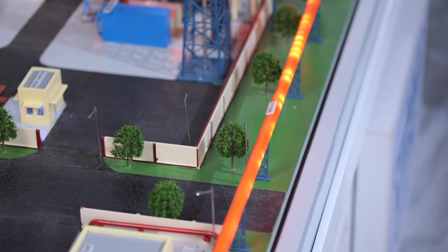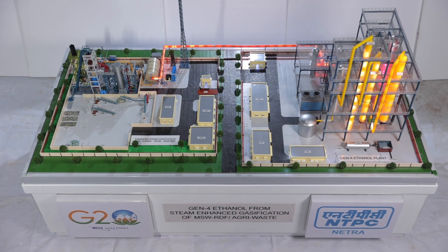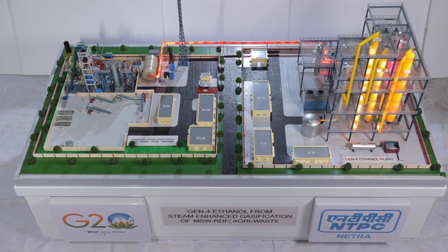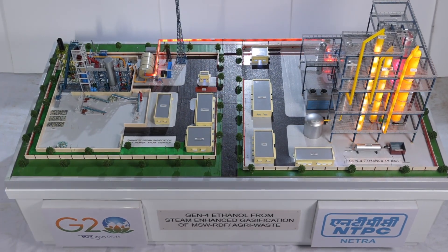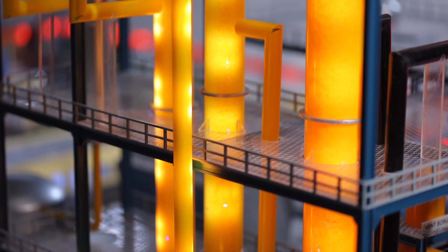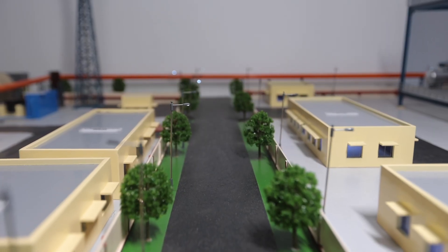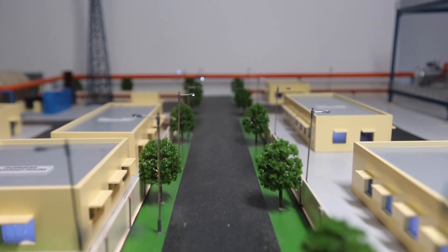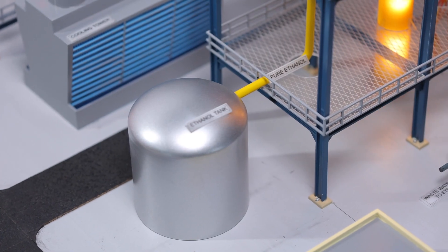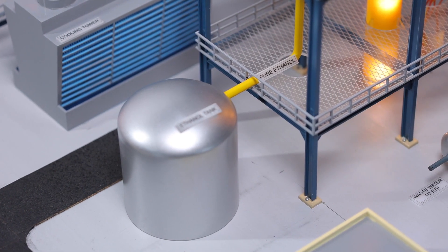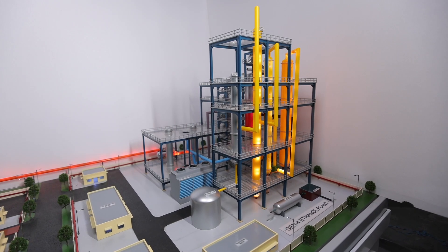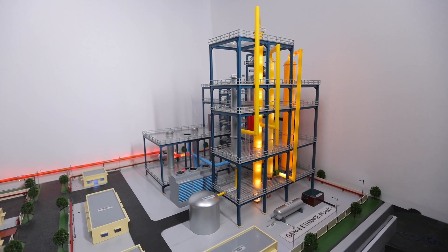Ethanol from MSW RDF Syngas: The syngas is produced by gasification of MSW RDF refused derived fuel. Since syngas is rich in CO percentage (carbon monoxide concentration), it can be used directly for ethanol synthesis. The ethanol production process is broadly divided into three sections.